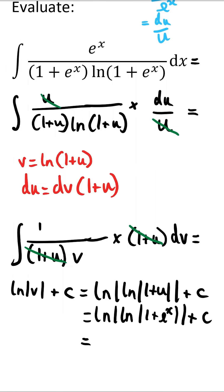And since 1 plus e to the x is always positive, we can remove the mod signs. And that's our final answer.